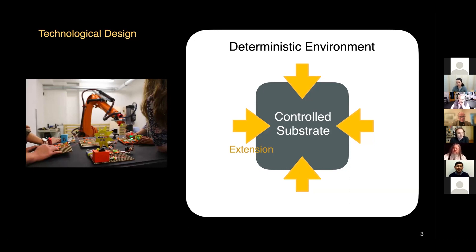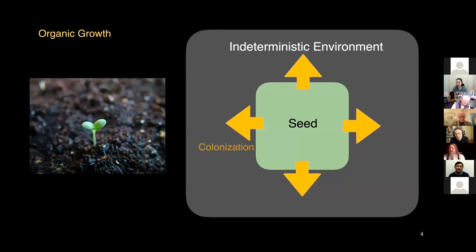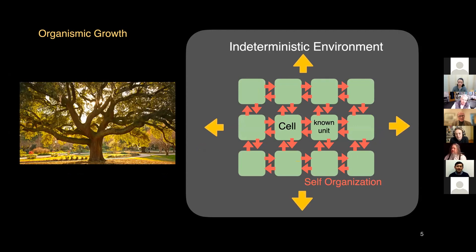In a technological design we are coming from the outside in. But if you look at a biological system, you do not have this deterministic environment to start with. Instead you have an indeterministic environment, and you start out with some seed that needs to colonize the environment — to branch out, to subdue it, to turn it into something that the seed knows how to deal with. Then gradually you go beyond simple organic growth to organismic growth, where you already know the structure around you because you have created it, or you are part of something that had a shared destiny. Now you have known units around you with which you can collaborate and organize — you are colonizing the outside, internally organizing from the ground up, from local units, inside out.